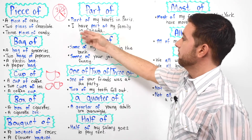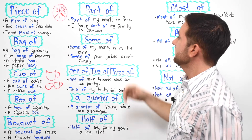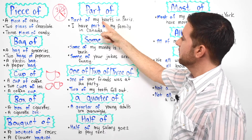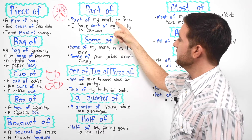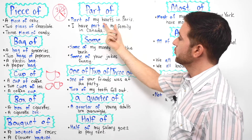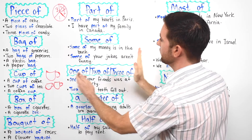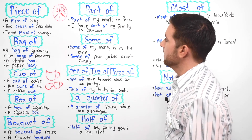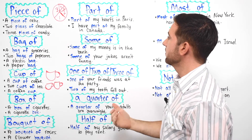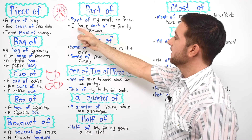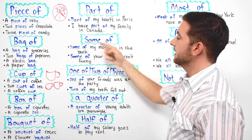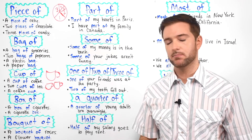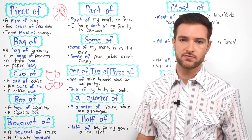And then we have "part of." It says part of my heart is in Paris. Notice here that we have "heart's" with an apostrophe S because it's a contraction, meaning it's abbreviated for "heart is." A part of my heart is in Paris. And I have part of my family in Canada — so not all of your family, but part of your family. Maybe one member, two members, or three members of your family.